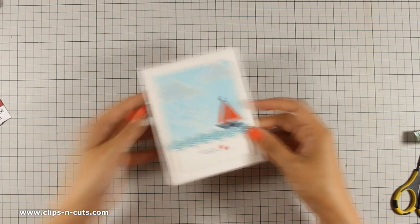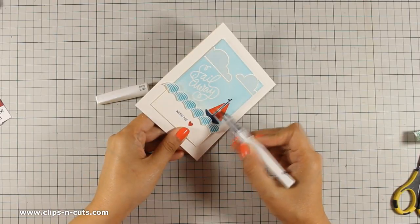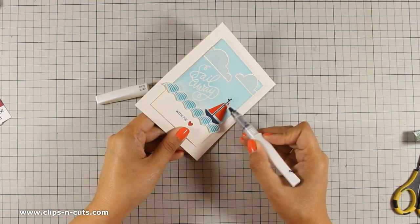And just because I cannot stay away from my Wink of Stella clear glitter pen I am going to add just a little bit of shimmer on the sailboat as well as on the little heart.